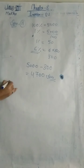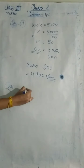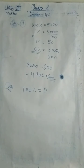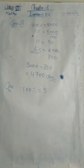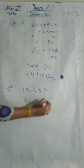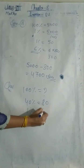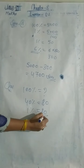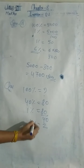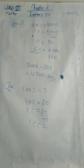To find the total students, we need 100% of the class. Since 40% equals 80, we find 1% first: 80 divided by 40 gives 2. So 1% of the class is 2 students.